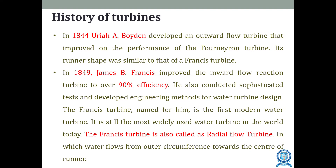The turbine was named the Francis turbine — the first modern water turbine — and it is still widely used in the world today. The Francis turbine is also called a radial flow turbine because water flows from the outer circumference towards the center of the runner.